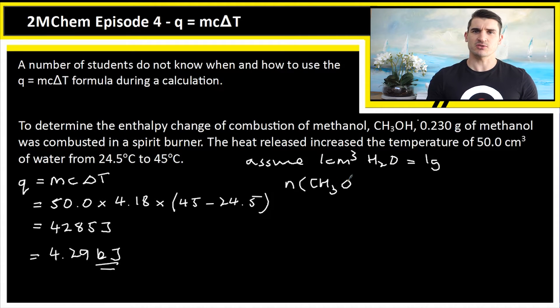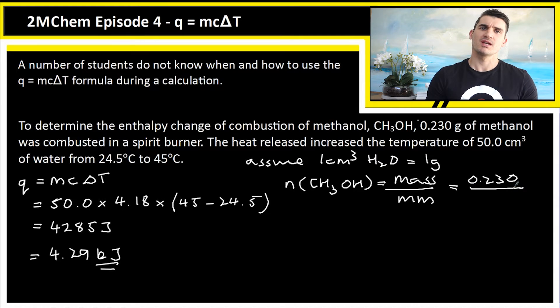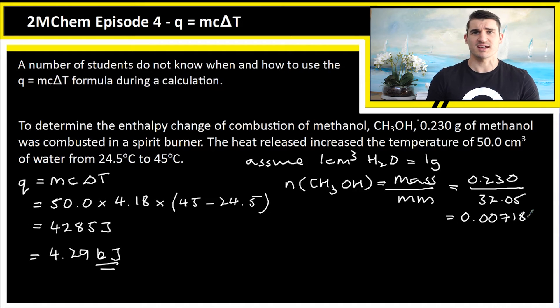So to work out the delta H, the steps here are to first find the number of moles of ethanol, which would be mass over molar mass. Now the delta H formula is the energy in kilojoules divided by the number of moles, and that's going to tell us the enthalpy of methanol in this reaction according to this data.